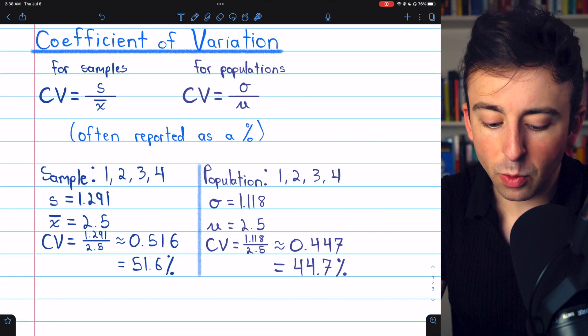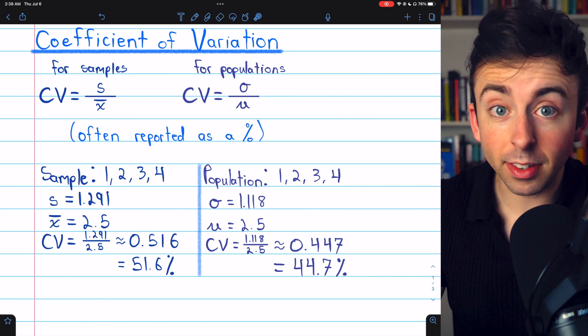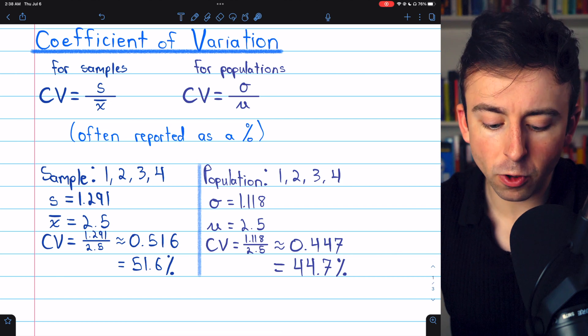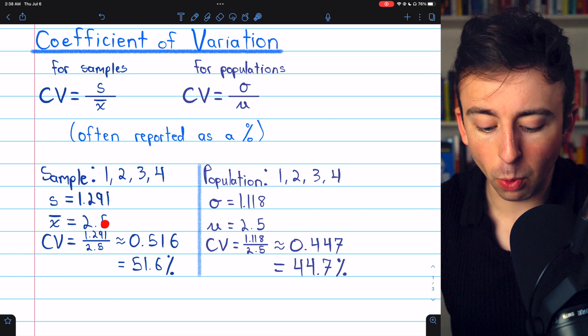For example, let's say we had a data sample consisting of 1, 2, 3, and 4. Then, if this is a sample, the standard deviation is 1.291, and the mean is 2.5.